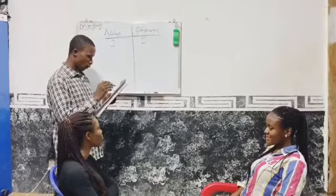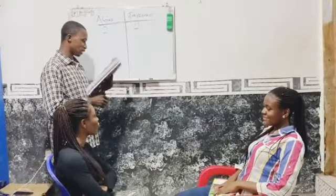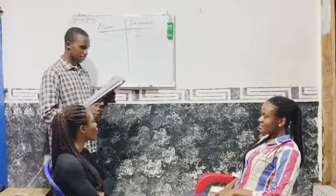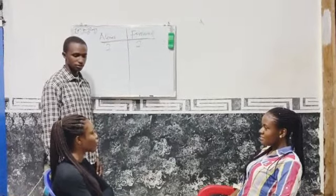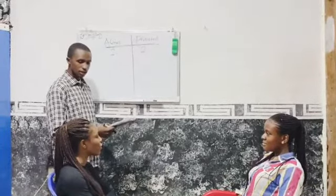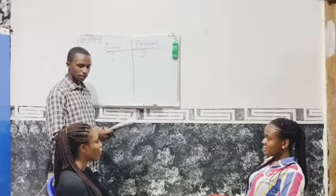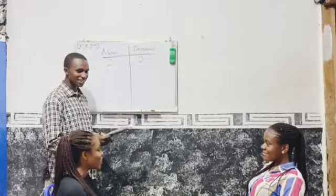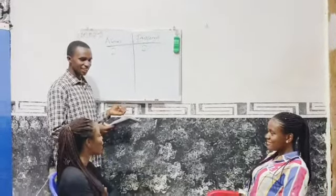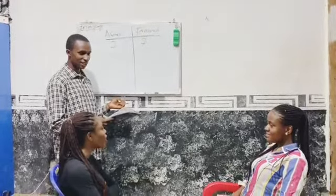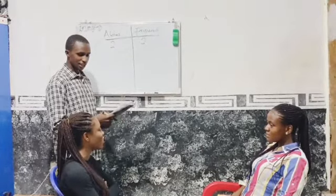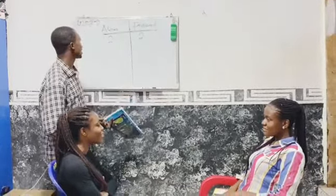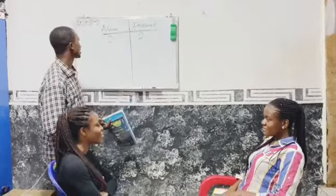Question four: list three open neural tube defects. The contestant mentioned anencephaly. Continuing, they said anencephali and hydranencephali. She tried — those are among the ones that can be mentioned. She gets one and a half for that answer.